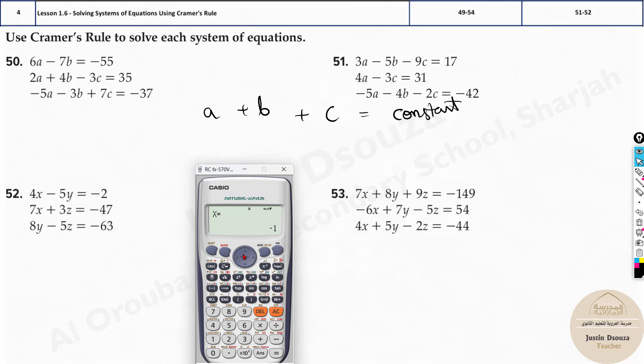Now press equal to. It will give you the value of the first variable. Now this will take it as x, y, z. This is a = -1, b = 7, and c = -3. That's it. You can do any problem in this directly.